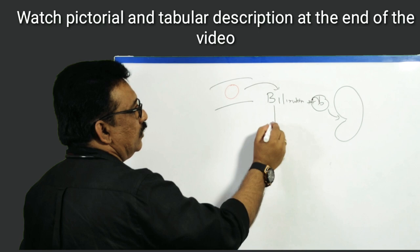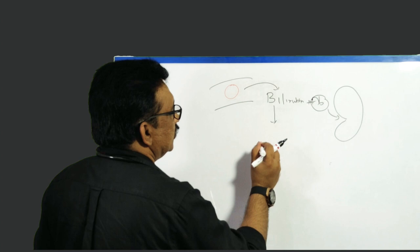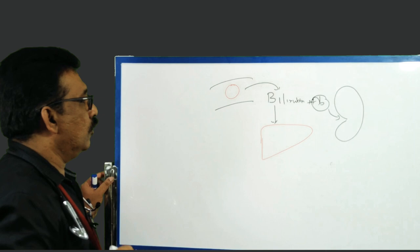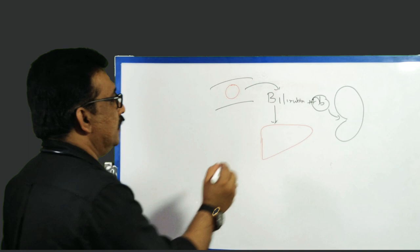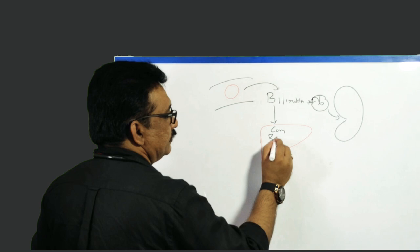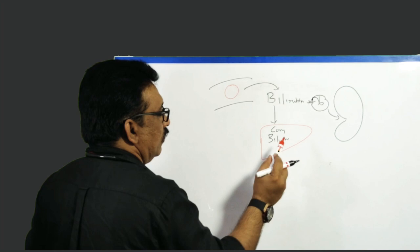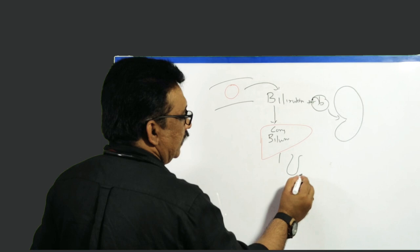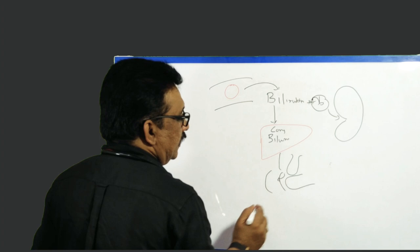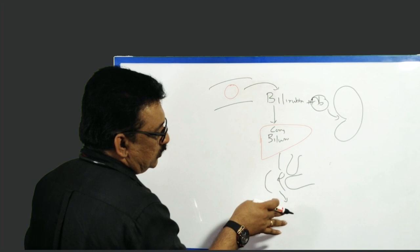The bilirubin comes back to the circulation and then goes to the liver. The bilirubin, which is unconjugated, will go to the liver, where an enzyme called glucuronyl transferase conjugates it — so unconjugated bilirubin becomes conjugated bilirubin. From the liver, it goes through the bile duct. You can see the gallbladder, pancreas, and intestine. This bilirubin is secreted into the intestine and passes out through the stool — this is called stercobilinogen.